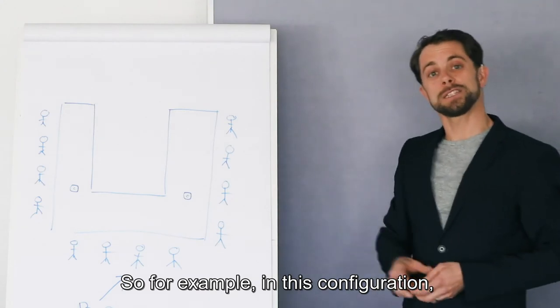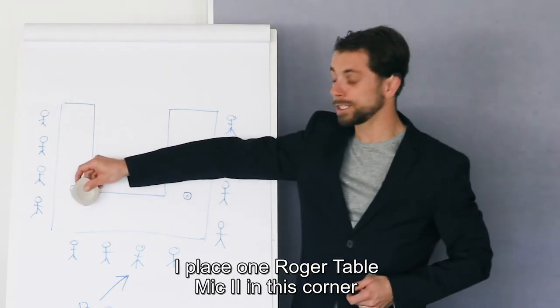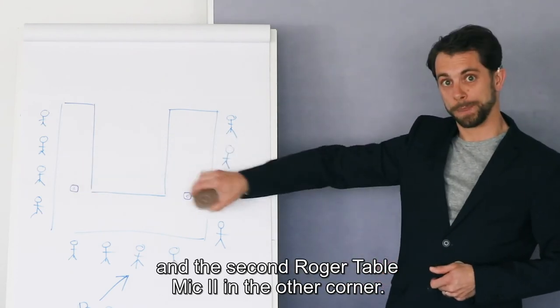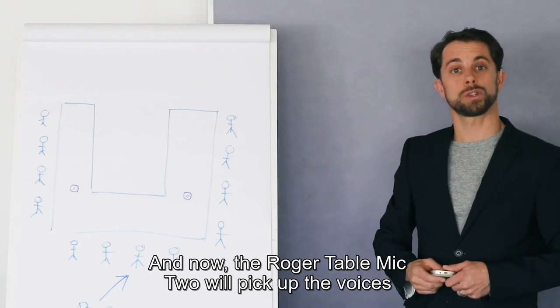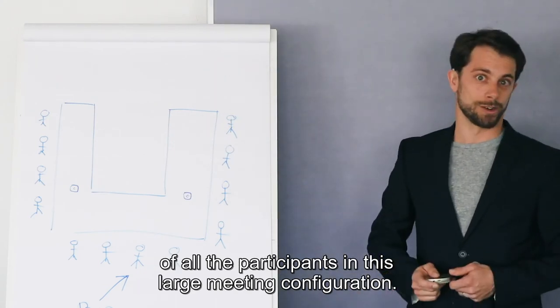For example, in this configuration, I place one Roger Table Mic 2 in this corner and the second Roger Table Mic 2 in the other corner. Now the Roger Table Mic 2 picks up the voice of all the participants in this large meeting configuration.